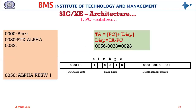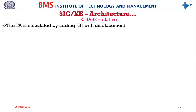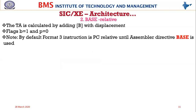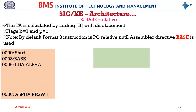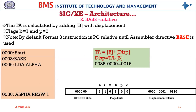How PC-relative addressing is calculated will reappear when we do the assembly. The next addressing mode is base-relative, wherein the target address is computed by adding the contents of the base register with the displacement, wherein the b flag will be one and n and i will be one and one, with the rest all zero if no indexing is used.